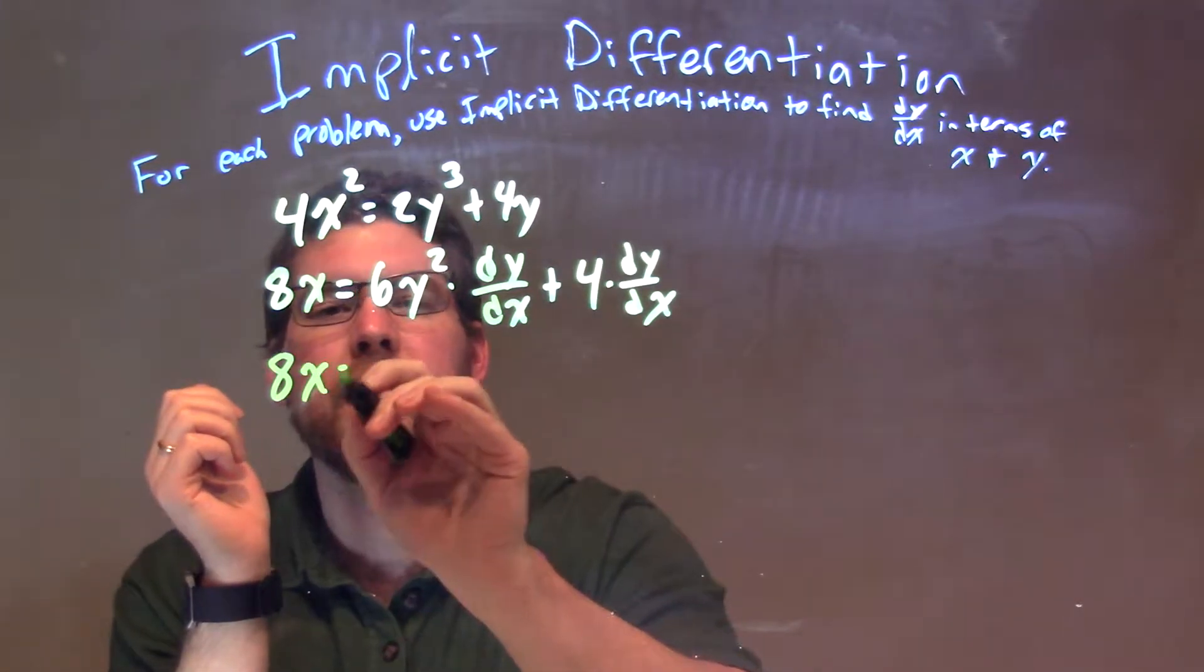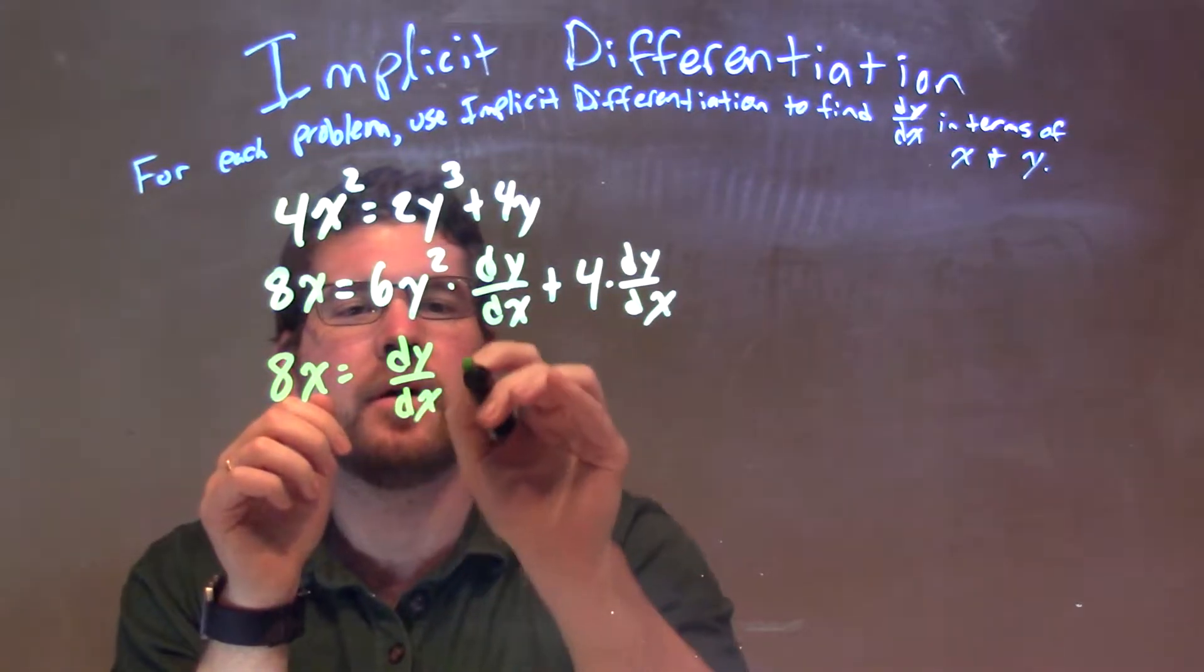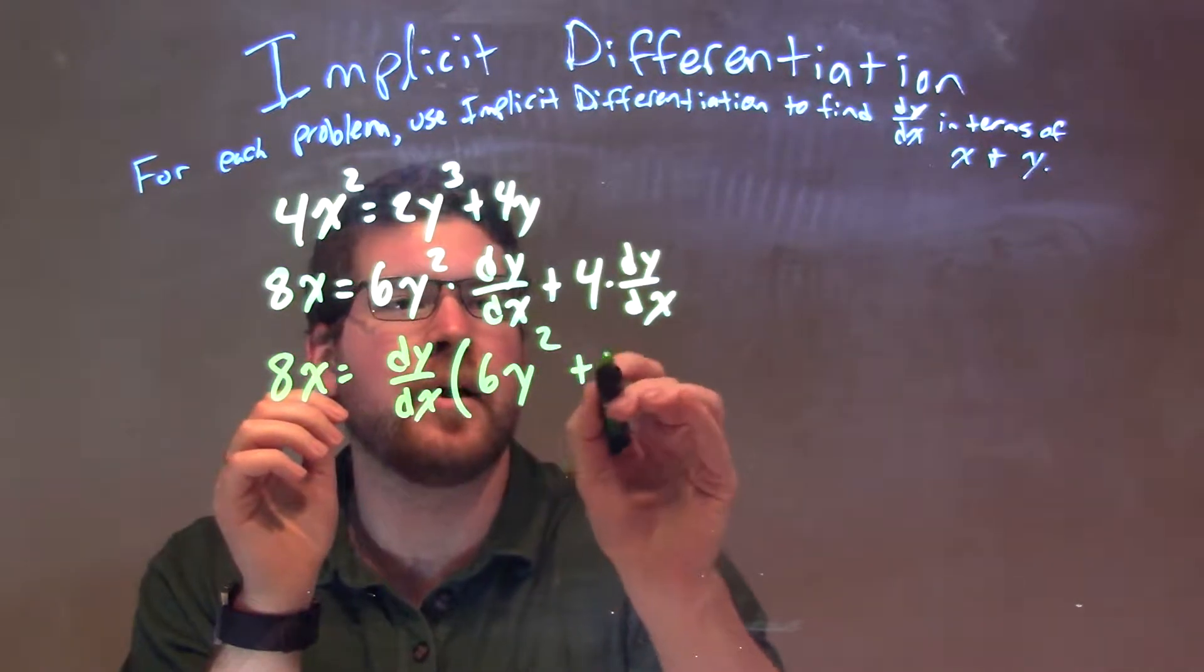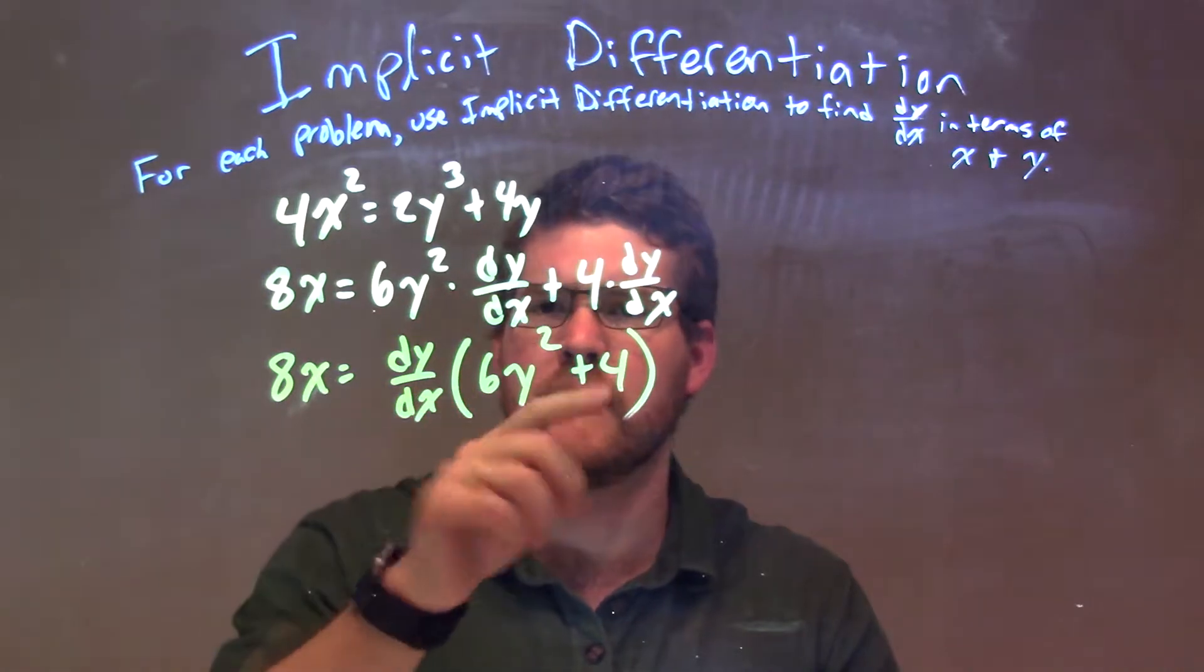is equal, so let's pull out a dy/dx, dy/dx out front, times what's left, right, 6y squared plus 4. So, I'm going to get 6y squared plus 4 there, and dy/dx right out front.